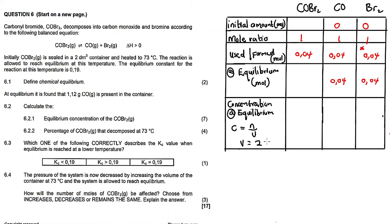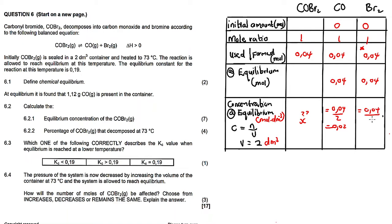The volume is two cubic decimeters. The unknown value X is the equilibrium concentration of carbonyl bromide. For carbon monoxide and bromine, we calculate concentration using: C equals n divided by V, which is 0.04 divided by 2 equals 0.02 moles per cubic decimeter. So the equilibrium concentration of both CO and Br₂ is 0.02 mol·dm⁻³.